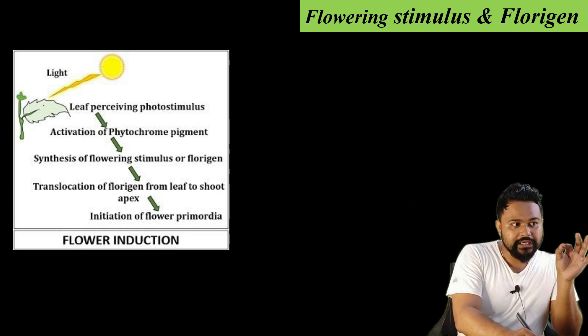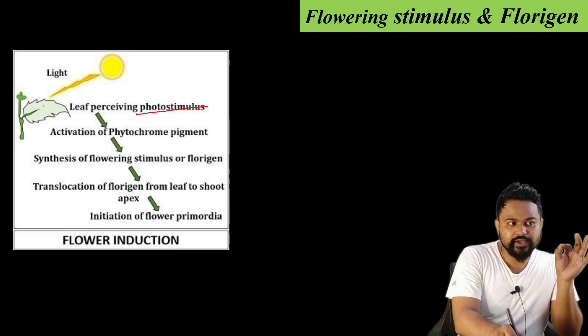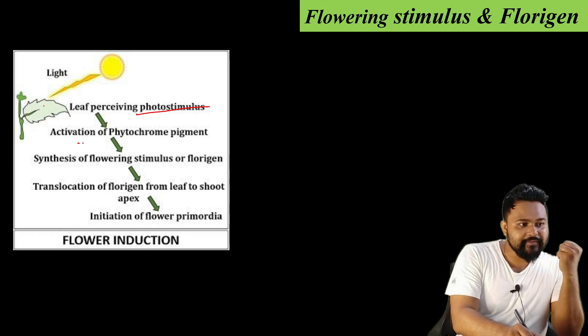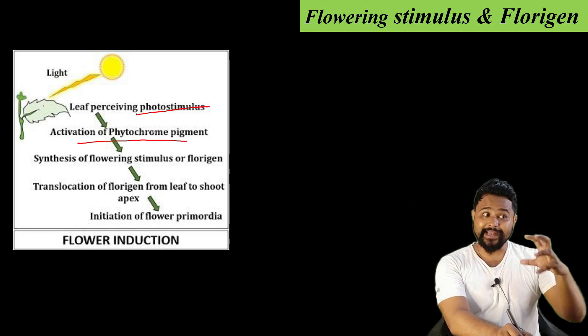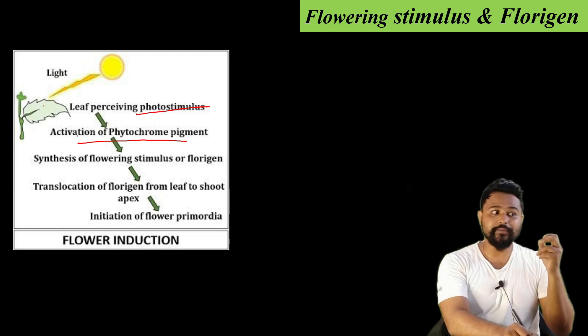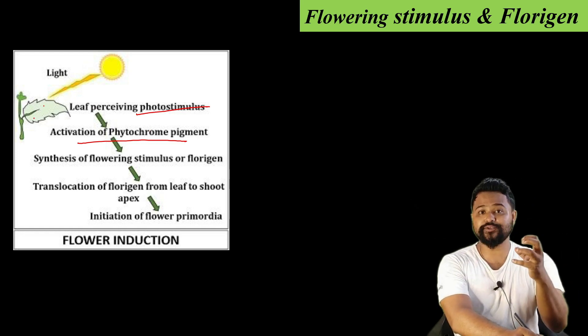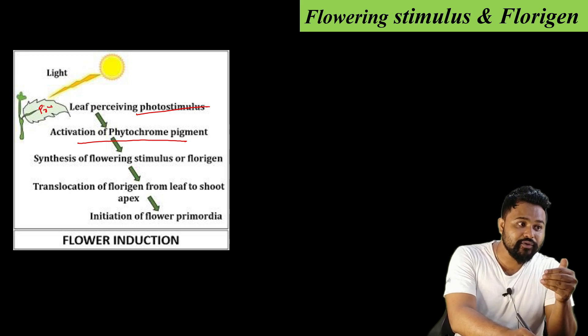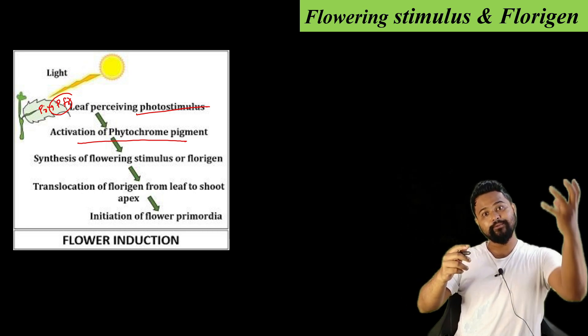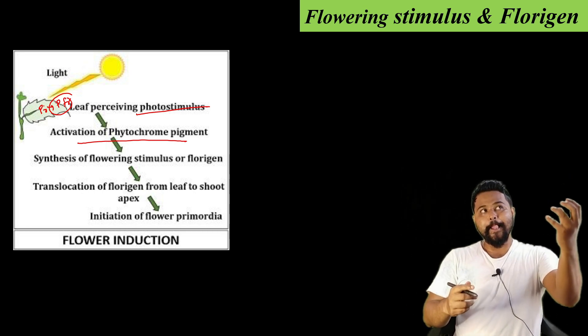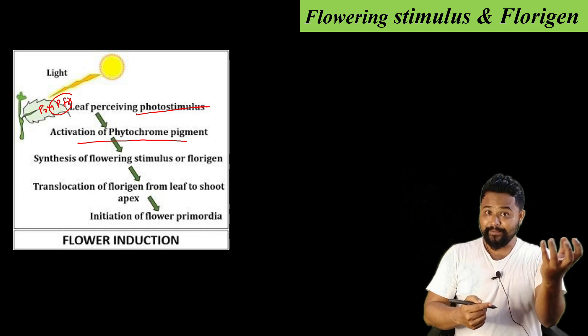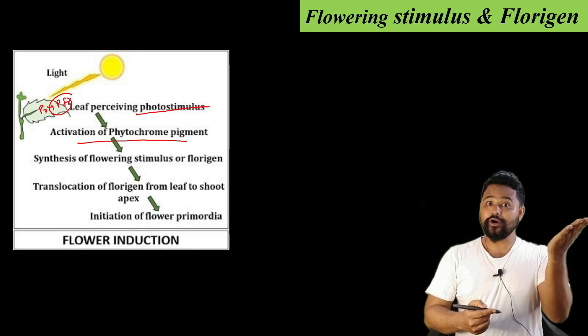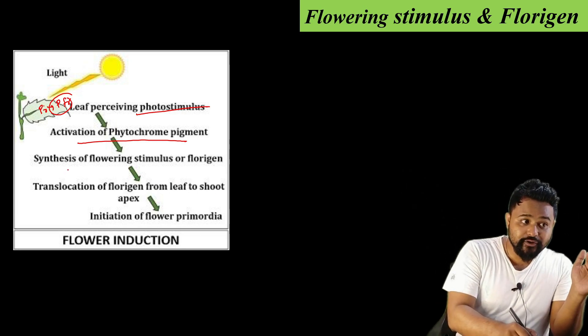Light perception, leaf perceiving photostimulus, activation of phytochrome pigment - the photoreceptors, phytochromes. So PR converts to PFR. In long day plants, PFR develops over time and accumulates. PFR promotes long day plant flowering through synthesis of flowering stimulus or florigen.